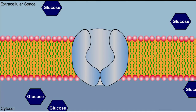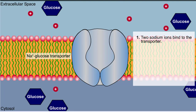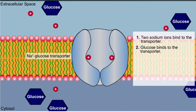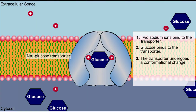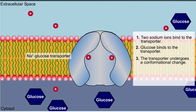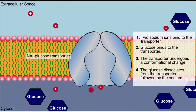A good example of a symport conformational transport protein is the sodium-glucose transporter found in the renal epithelial cells of the kidney. This process is not passive — the potential energy of a steep sodium gradient is dissipated and used to drive the movement of glucose against its concentration gradient.